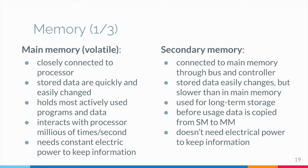The processor performs all the fundamental computations of the computer system. Other components contribute by storing data or moving data into and out of the processor. But the processor is where the fundamental action takes place. A processor chip has relatively little memory.